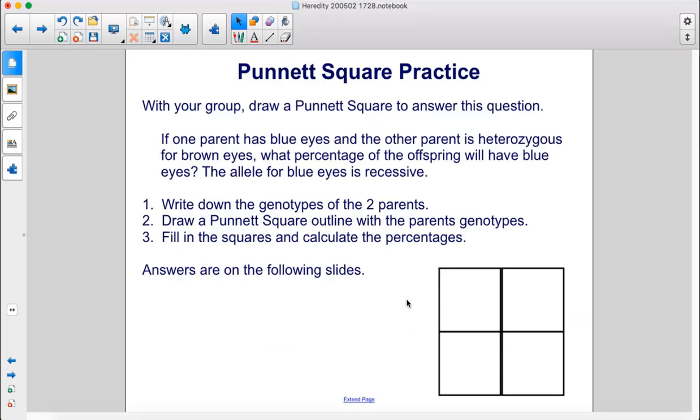With your group, draw a Punnett Square to answer this question. If one parent has blue eyes and the other parent is heterozygous for brown eyes, what percentage of the offspring will have blue eyes? The allele for blue eyes is recessive.